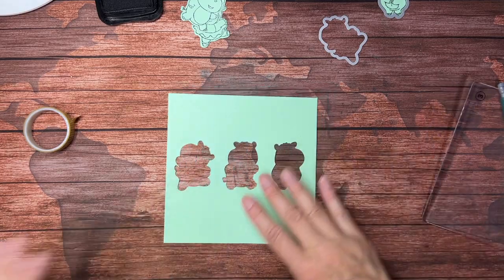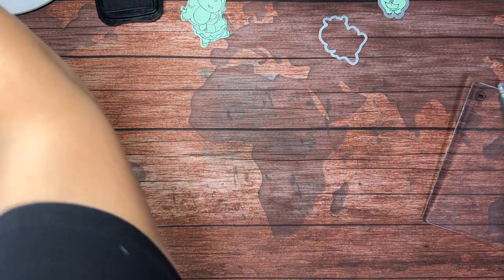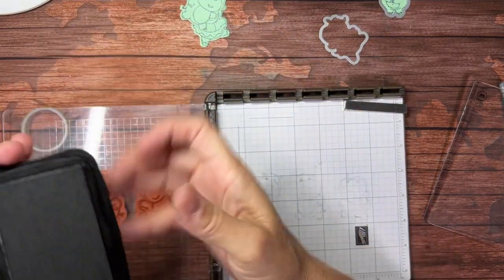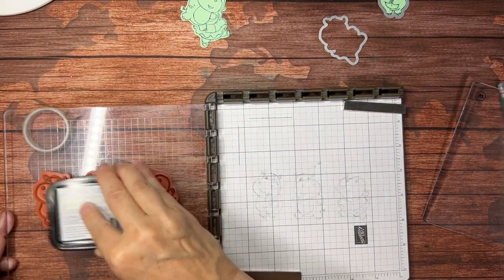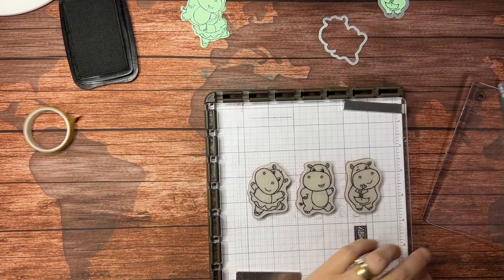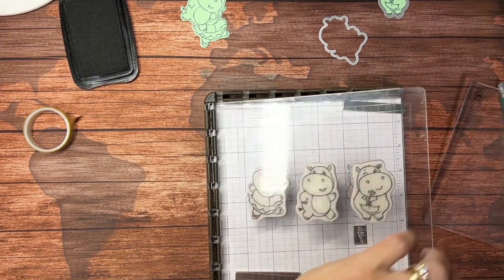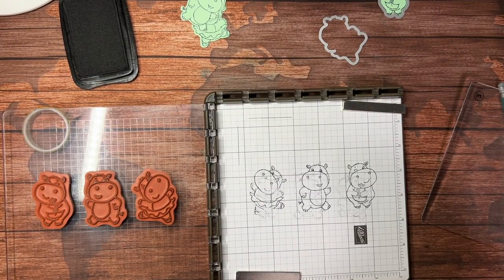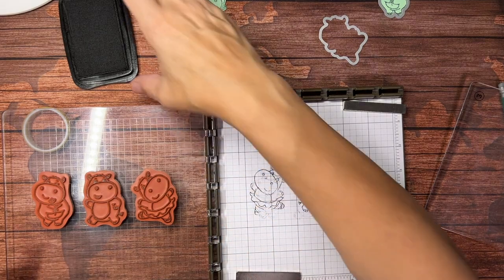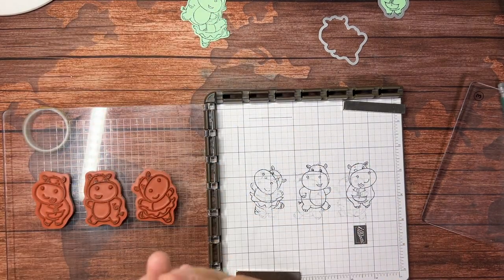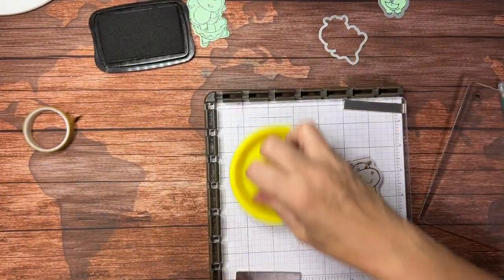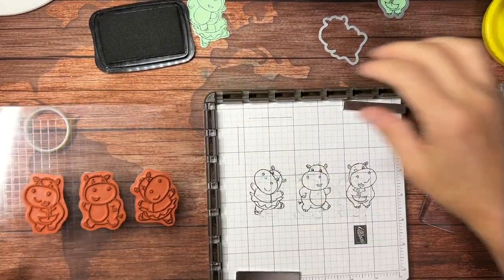I'm going to go ahead and bring my Stamparatus back in. I'm going to ink up my hippos—I have not moved them at all—put them there. This guy didn't ink up very well, I might want to ink her up again just so I can see where she's going. There we go.